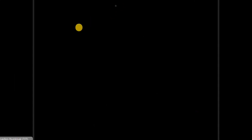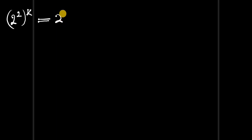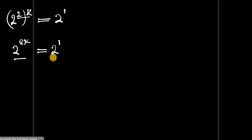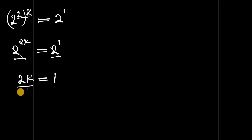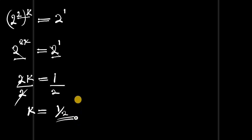Moving to the next step: we have 2^(2k) equals 2, and since 2 equals 2^1, we write 2^(2k) equals 2^1. The bases are the same, so we cancel them out, giving 2k equals 1. Dividing both sides by 2, we get k equals 1/2. But we are not done yet!